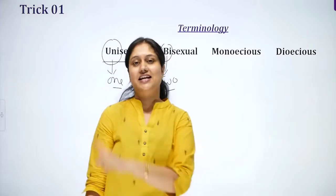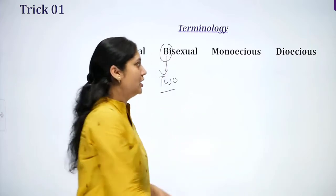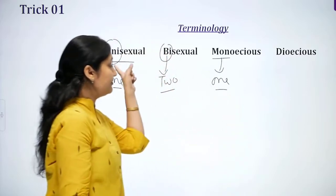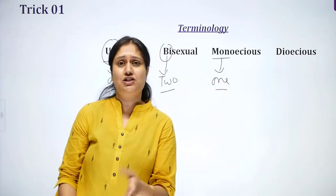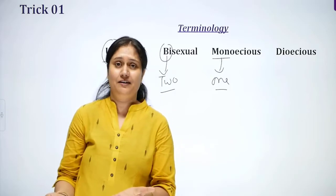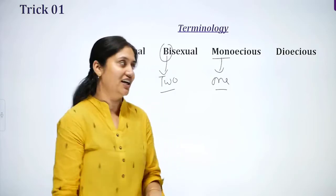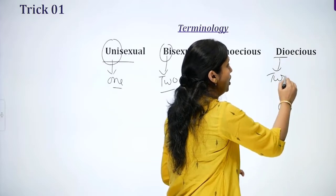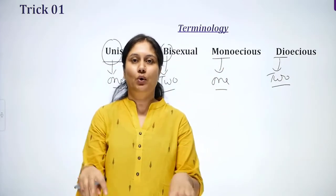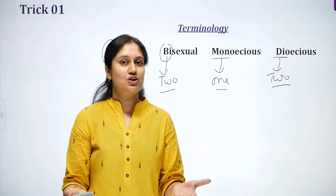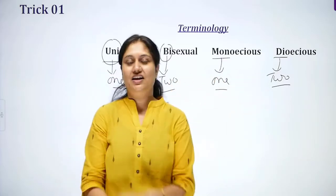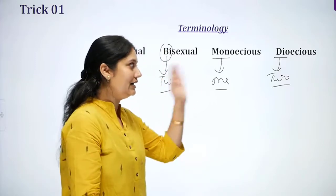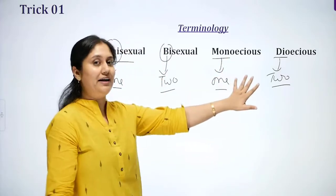Then the confusing conditions come: monoecious and dioecious. Mono means one. If we apply the same definition, we would think it means the organism is either male or female — but this is wrong for monoecious. Di means two — we might think two sexes in one organism — but this is also wrong. This confusion is common. We can learn this with a trick.